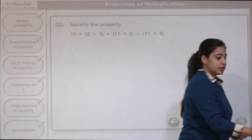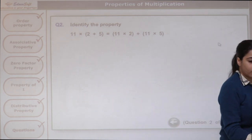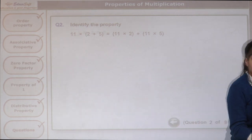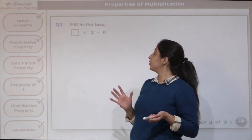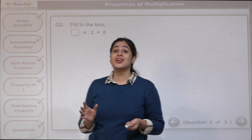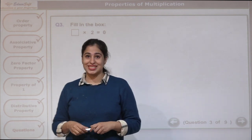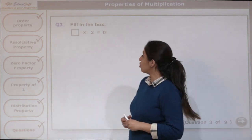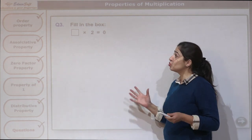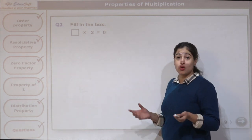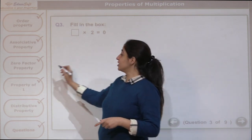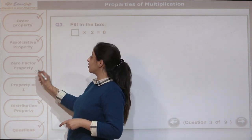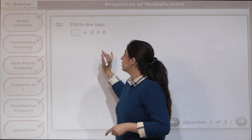Let us see the next question. Here we have to fill in the boxes. What times 2 gives 0? We are going to see the zero factor property here.